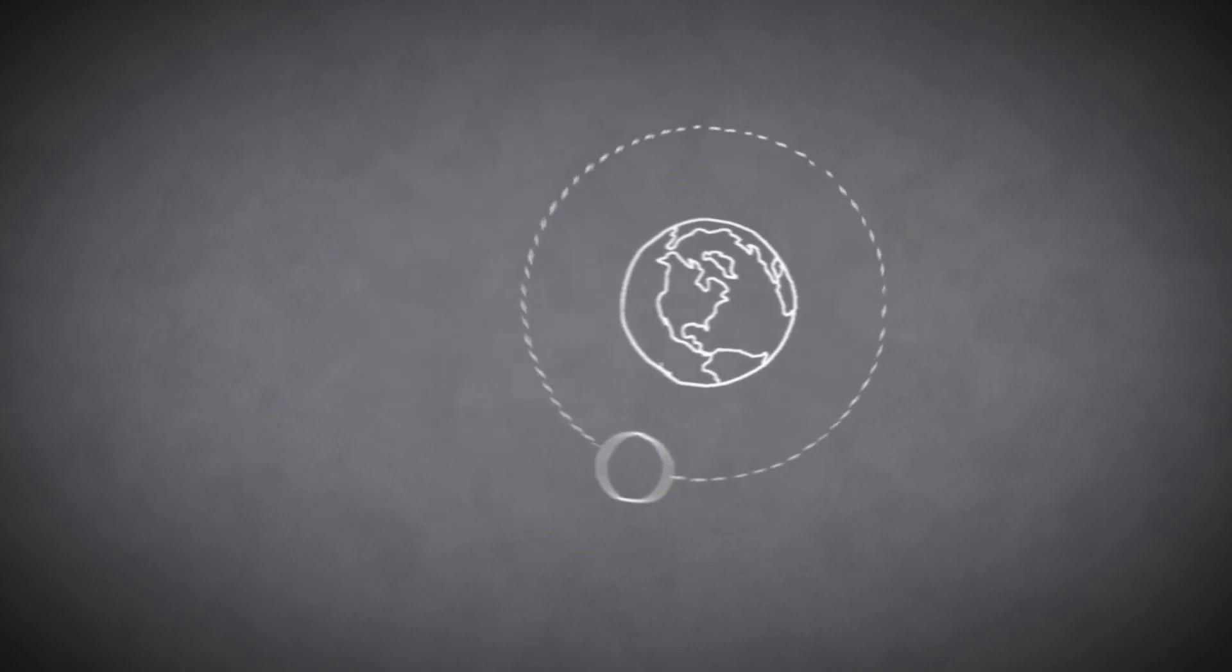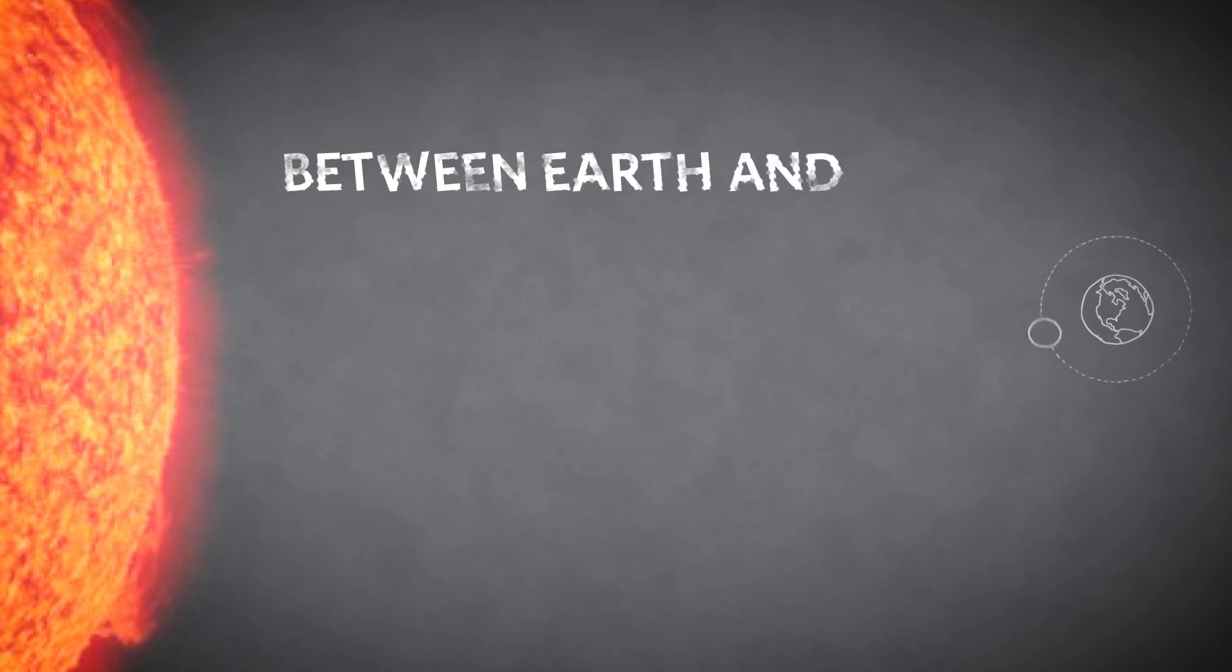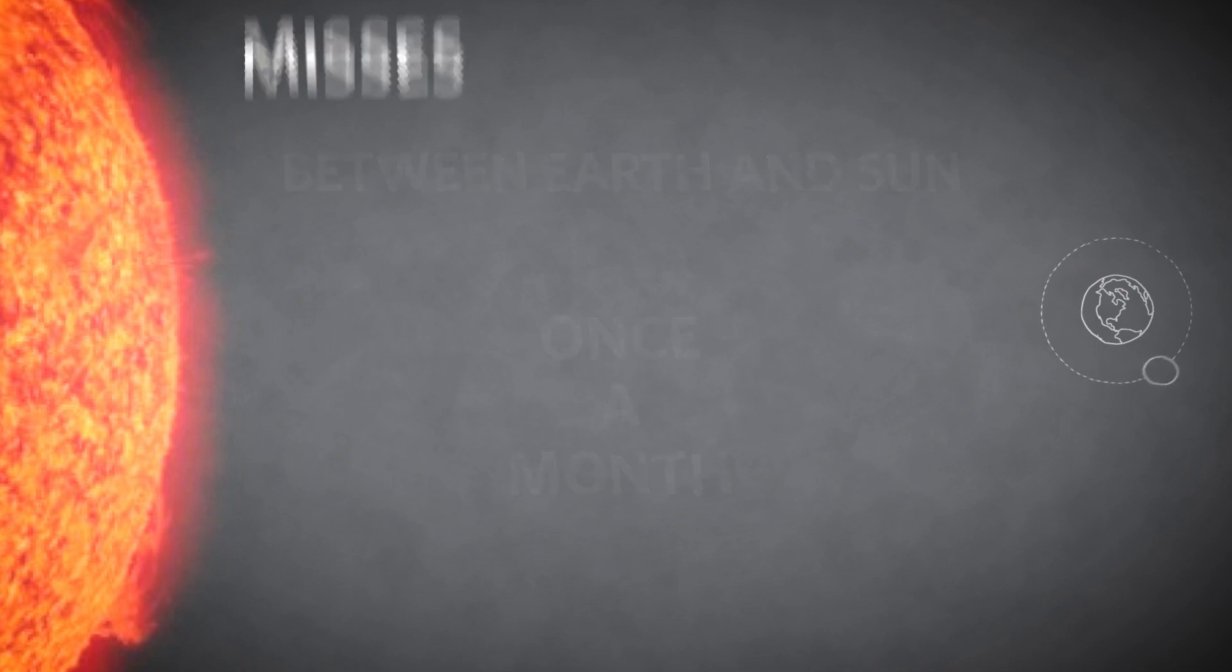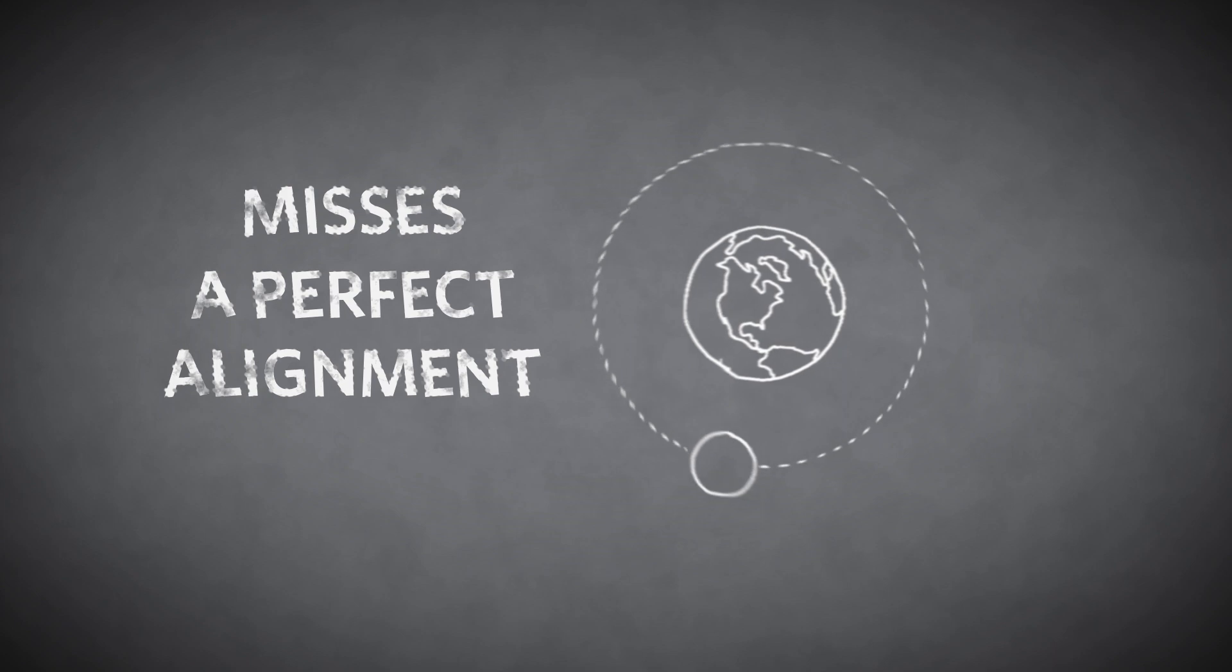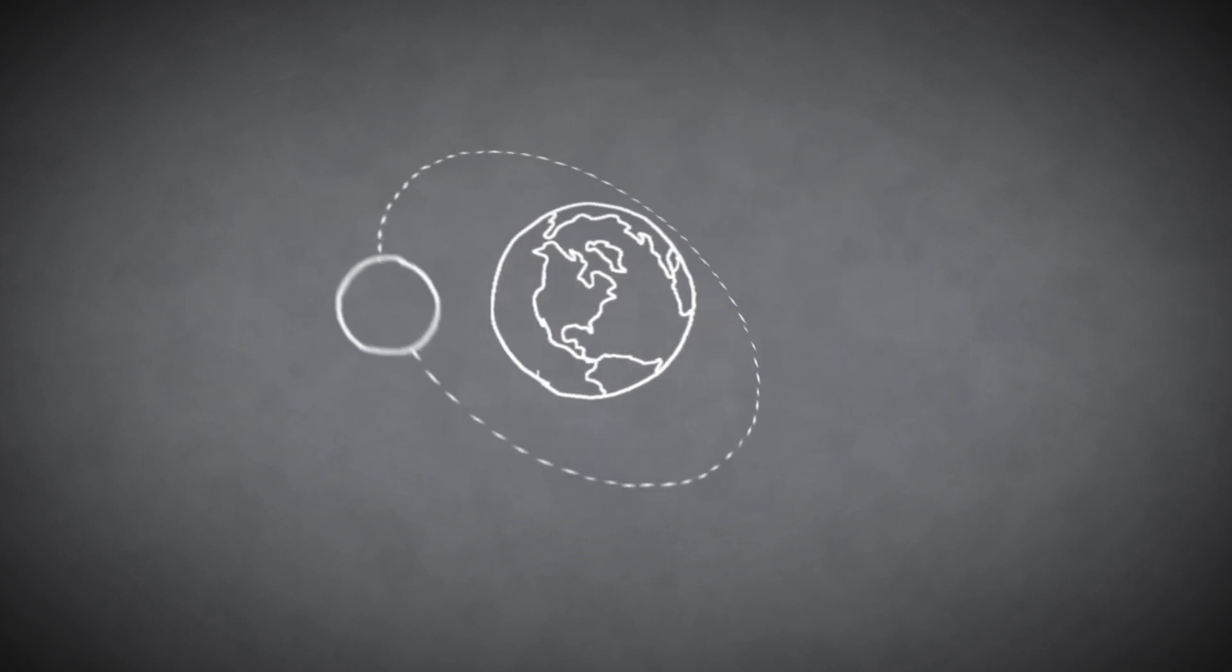As the moon circles our planet, it passes between Earth and the sun about once a month. But it usually misses a perfect alignment because the moon's orbit is slightly tilted with respect to the plane of Earth's orbit around the sun.